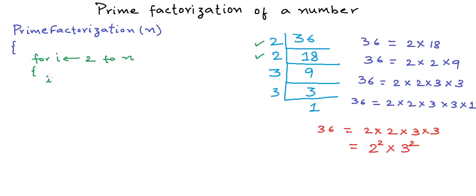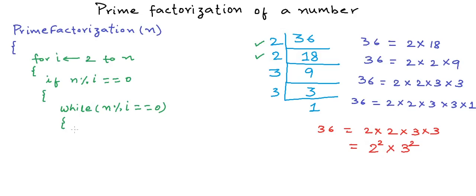We check if n modulo i is 0. While n modulo i is 0, we keep reducing n to n divided by i — we are dividing n by i as long as we can.